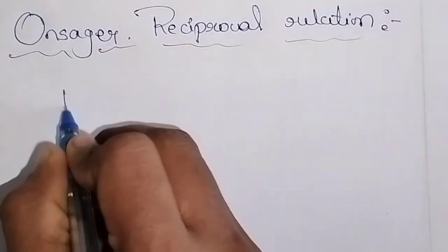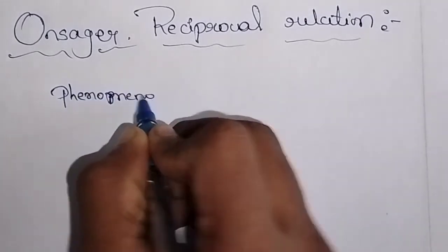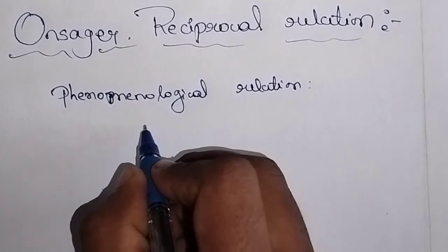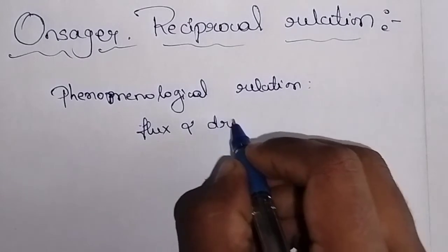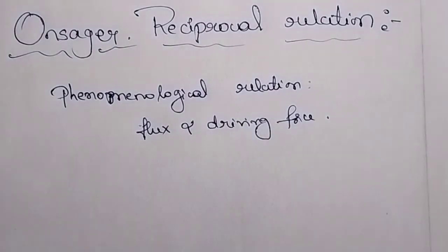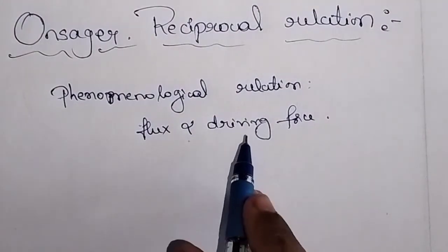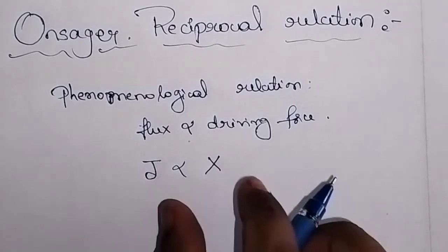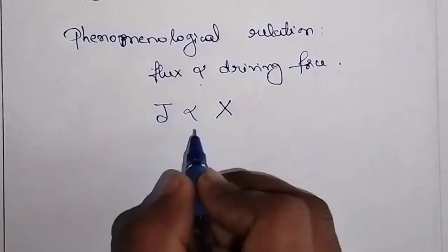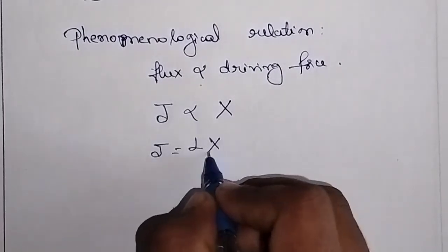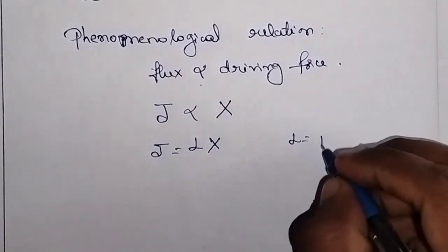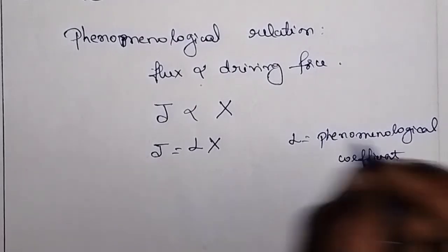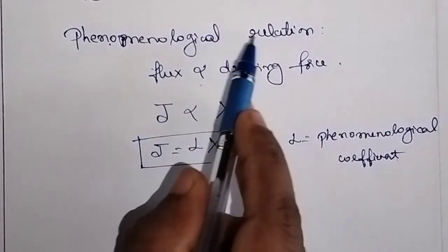We know the phenomenological relation gives the relationship between the flux and the driving force — flux is directly proportional to the driving force. If we represent flux by the letter J and driving force by the letter X, then to remove the proportionality sign, we write a constant L, where L is called the phenomenological coefficient. This particular relation is termed as the phenomenological relation or equation.